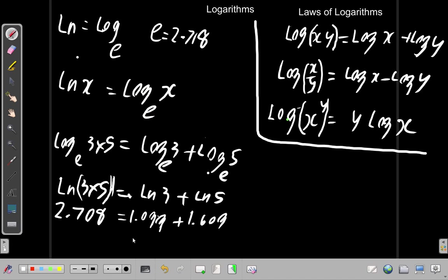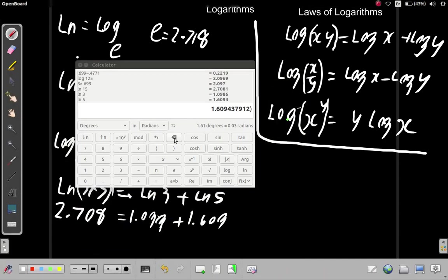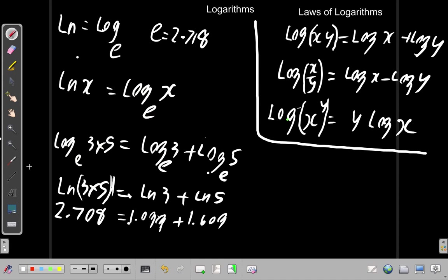What is 1.099 plus 1.609? So let's take this as it is. 1.099 plus 1.609 equals 2.708. You got it, so it is equal to 2.708.